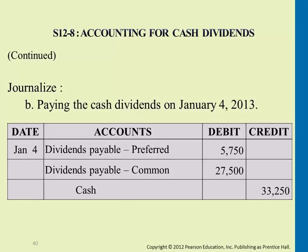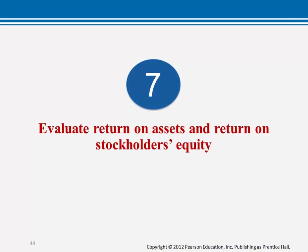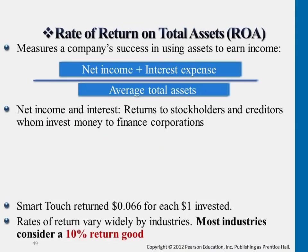Let's take a look at the last section of this chapter covering return on assets and return on stockholders' equity. These are two very important ratios. Shareholders and creditors will often use these to decide whether or not to invest in the business or lend money to it. Many ratios use different aspects to analyze a company from different perspectives.